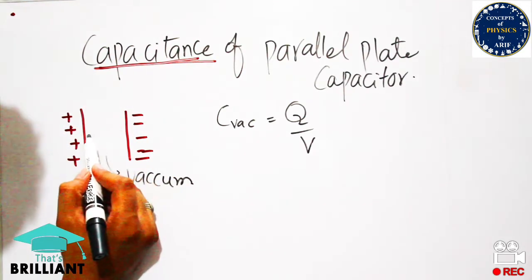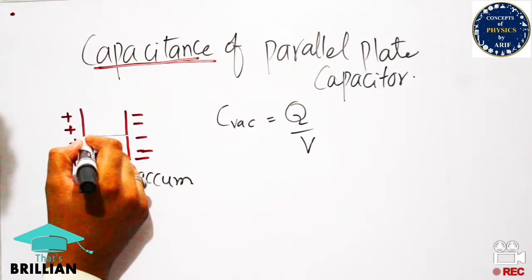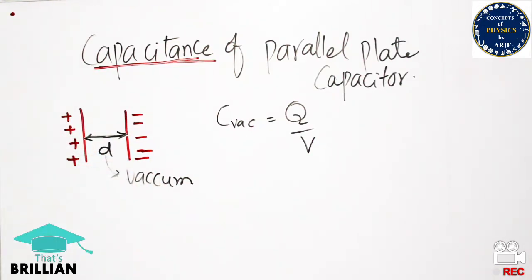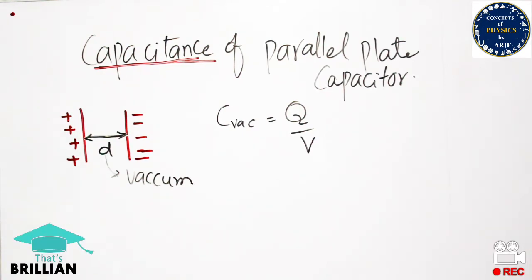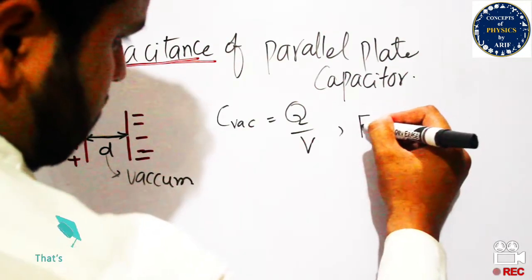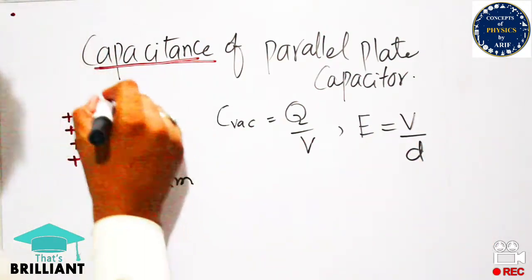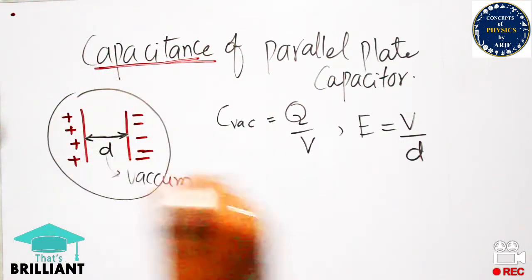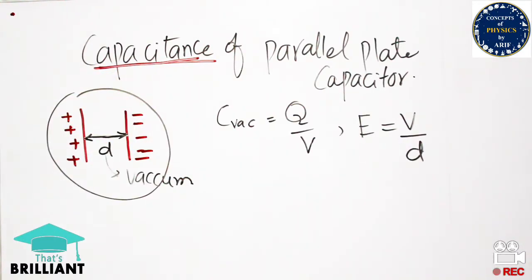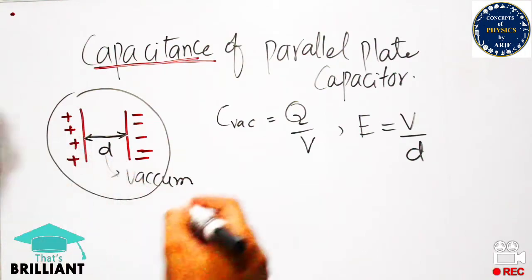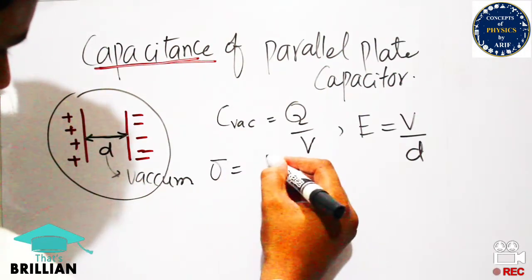The distance or separation between the two parallel plates is d. The electric field intensity is calculated as E = V/d, which is voltage per unit distance. This is the electric field intensity of a parallel plate capacitor having separation d. Furthermore, the surface charge density on the plate can also be found.